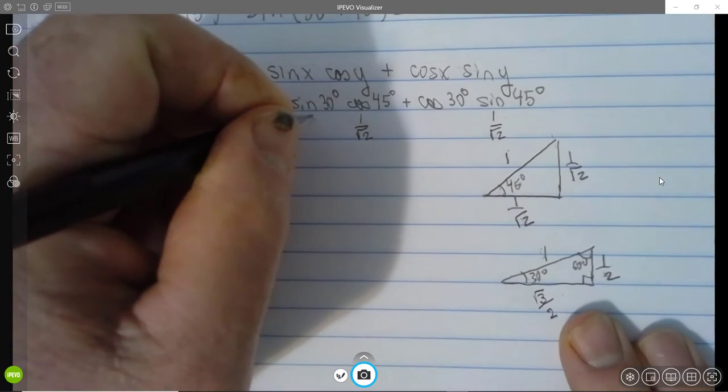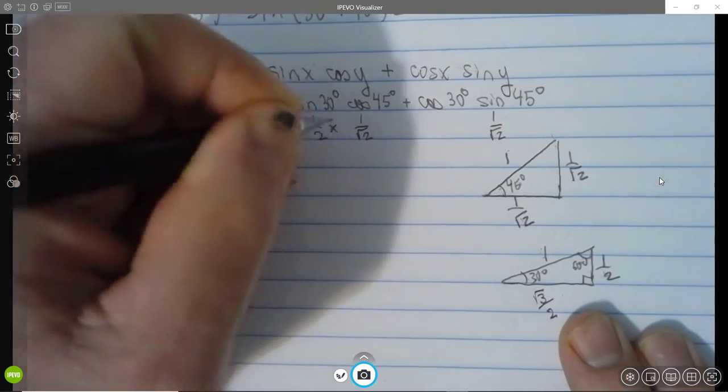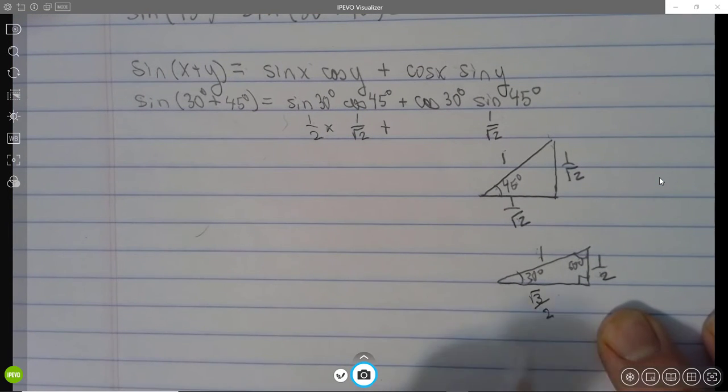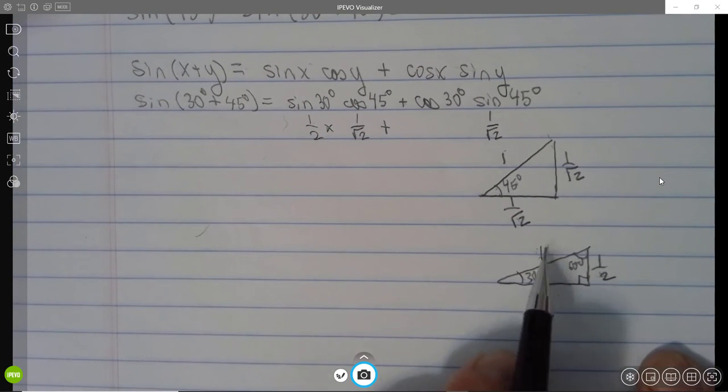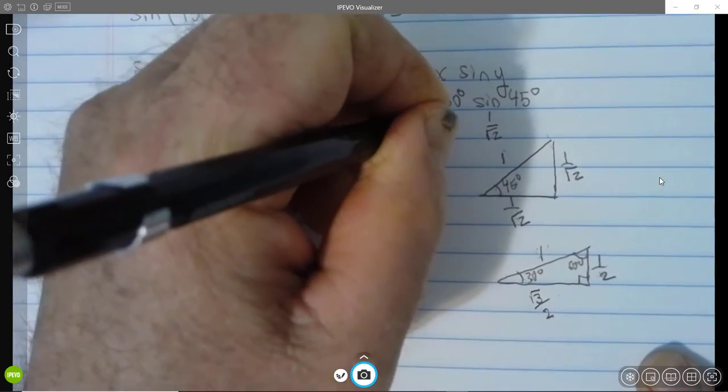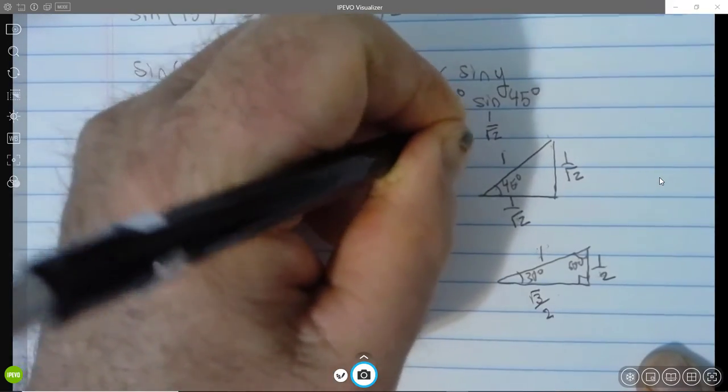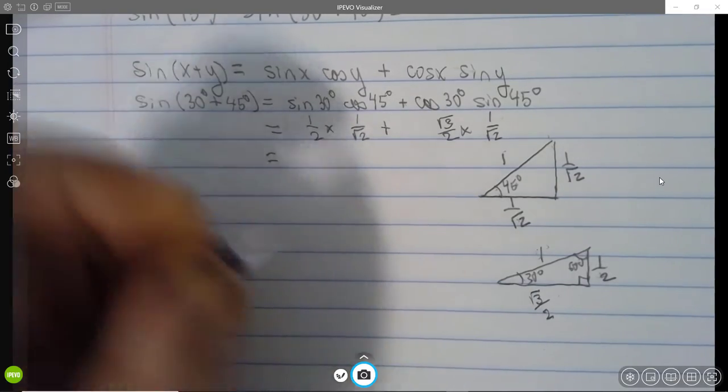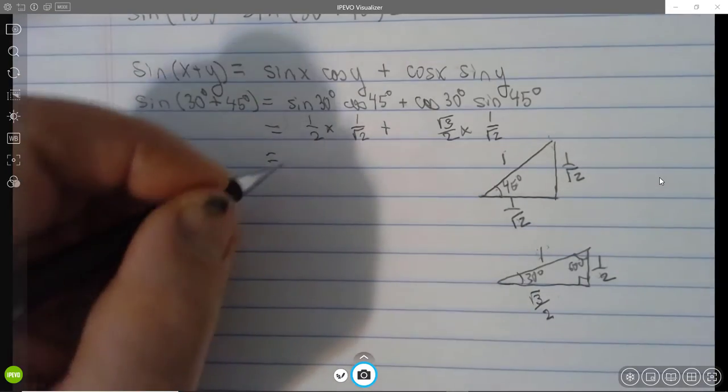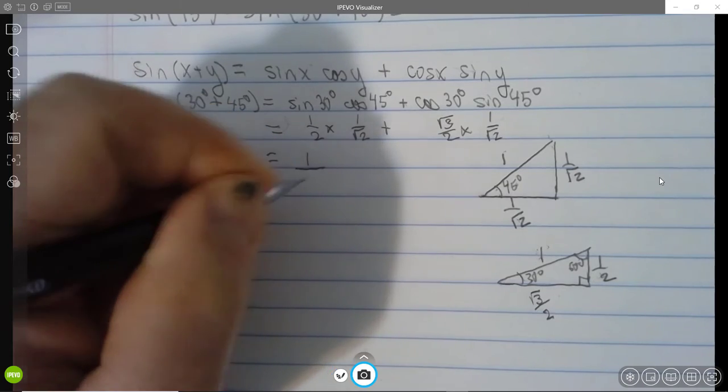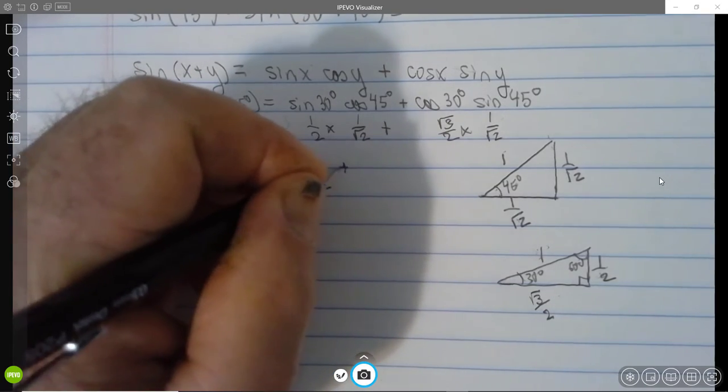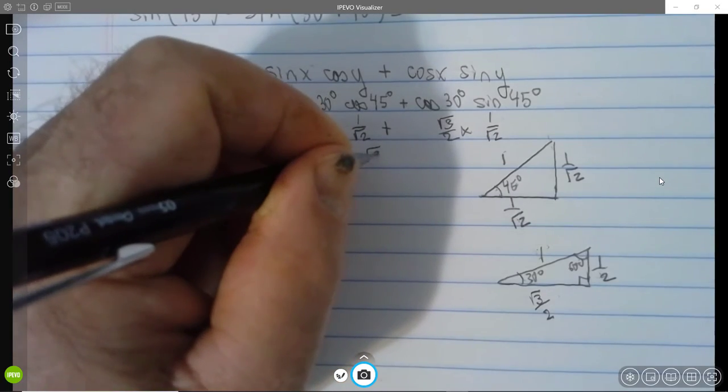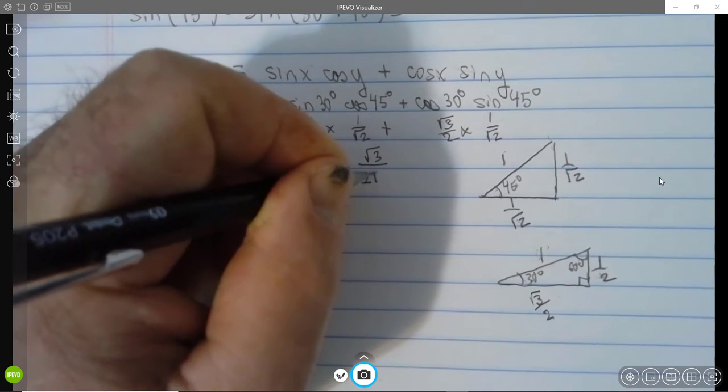So we can plug these in. This is 1 half here. Cosine of 30 degrees is adjacent over hypotenuse, root 3 over 2. And now we're ready to just do the arithmetic. So we have 1 over 2 root 2 plus root 3 over 2 root 2.